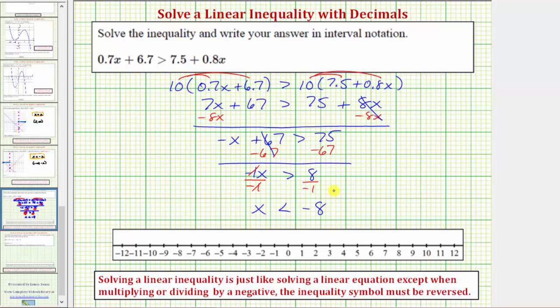So our solution as an inequality is x is less than negative eight. Let's go ahead and graph this on the number line. And then we'll express the solution using interval notation. To graph x as less than negative eight, we make an open point on negative eight because negative eight is not in the interval.